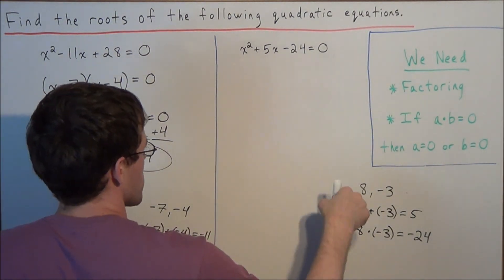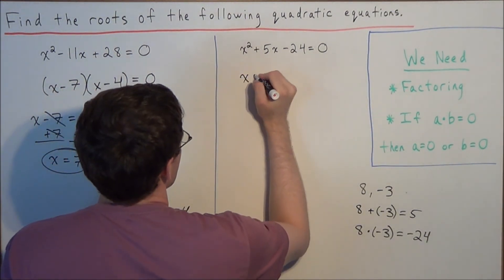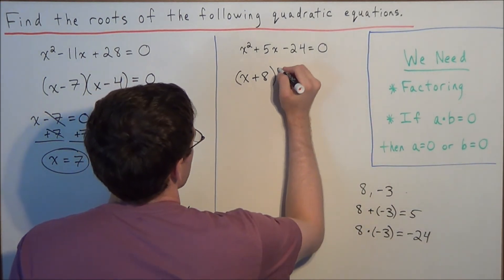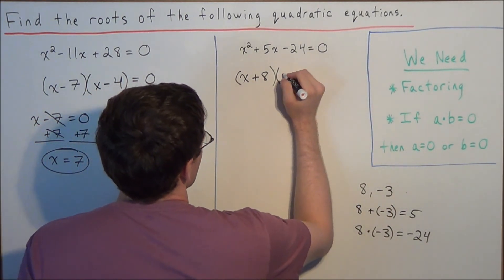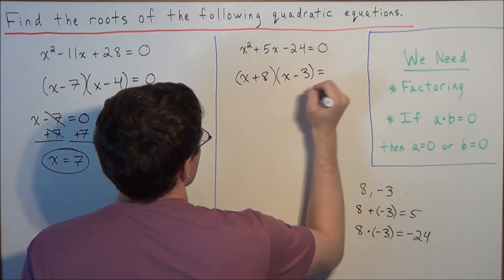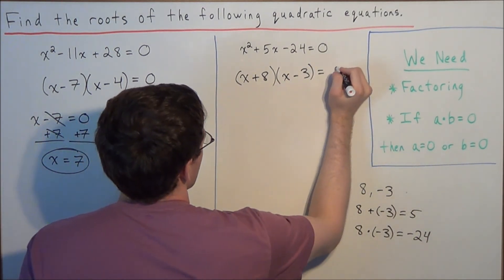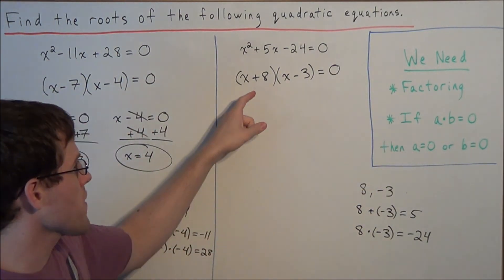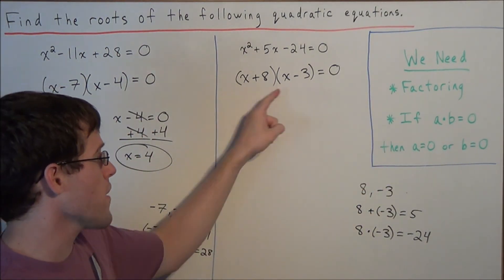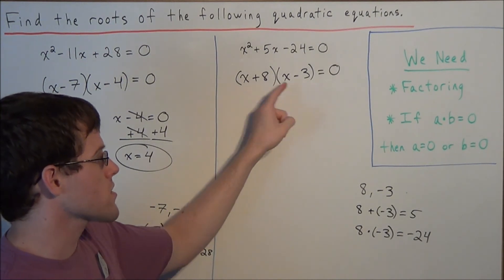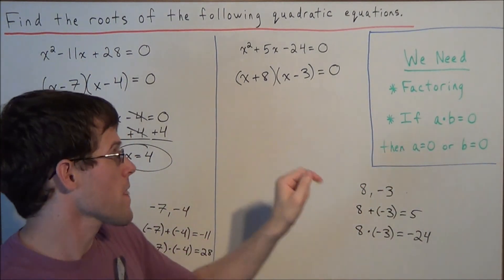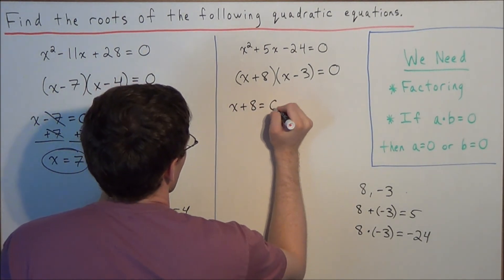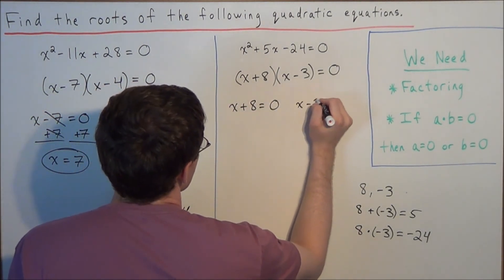So this tells us that these are definitely our factors for this quadratic expression. We can break it into two binomials: x plus 8 as the first factor, and x minus 3 as the second factor. And remember, the product of these two binomials is equal to zero. So once again we use this fact: the product of two factors equal to zero tells us that either x plus 8 equals zero, or x minus 3 equals zero.